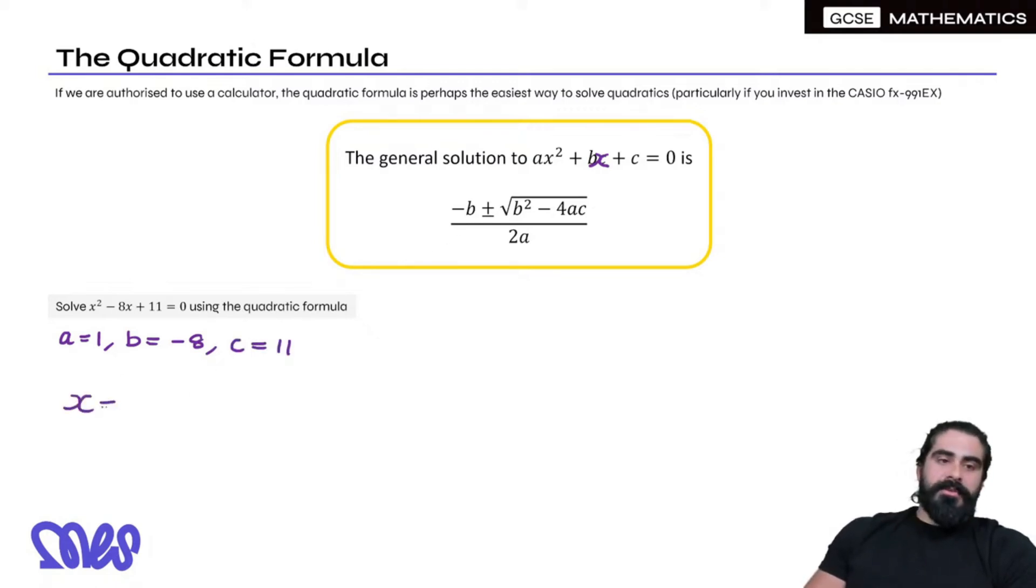Then we plug it in. x equals the negative of b. Negative of b just means change the sign on b, so -8 becomes plus 8. Plus or minus the square root of b². Make sure you use a bracket. Minus 4ac all over 2 times a.